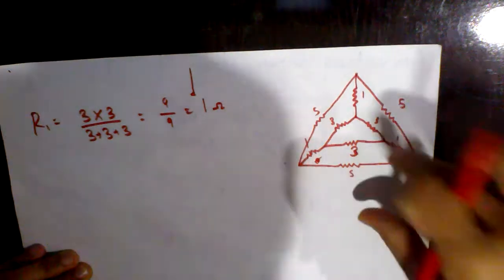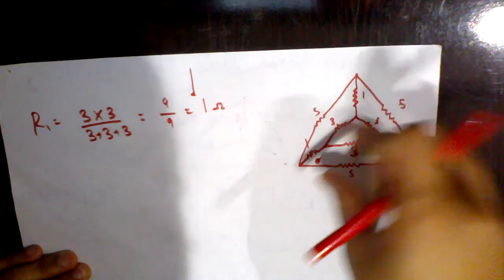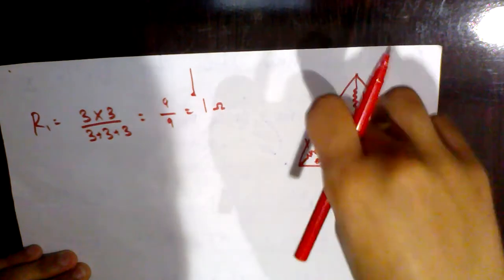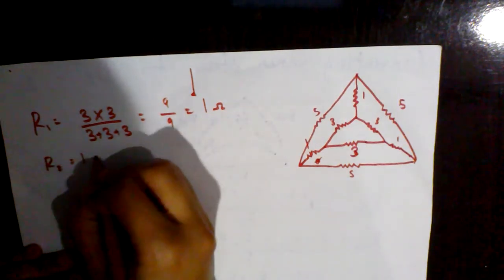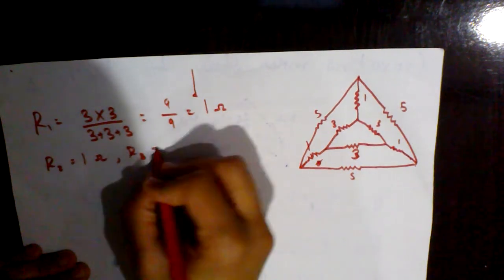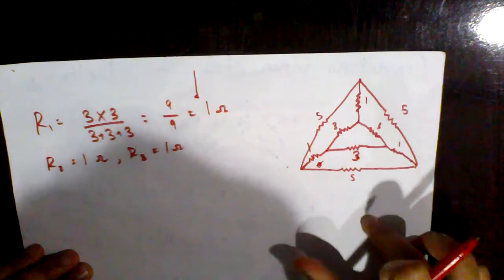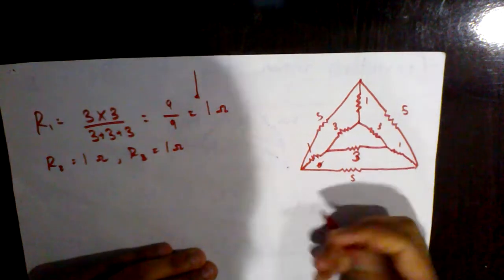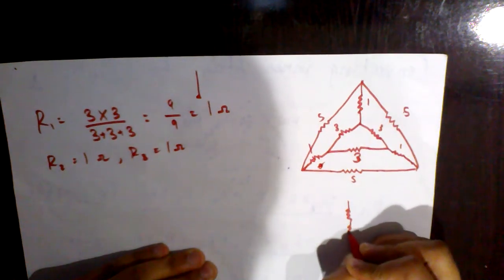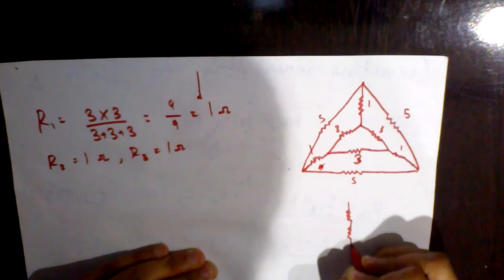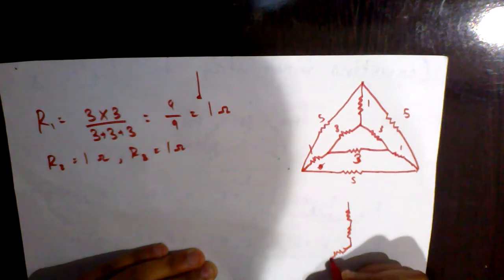So we get 1 ohm. Now, because all three resistances are equal, R2 will also be 1 ohm and R3 will also be 1 ohm. Then after resolving this, the equivalent diagram which we get — I will be drawing this diagram for you now.